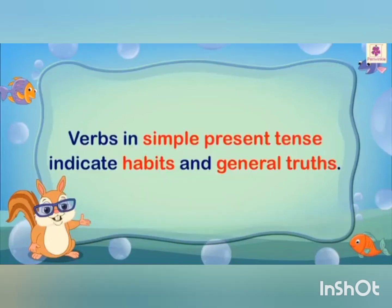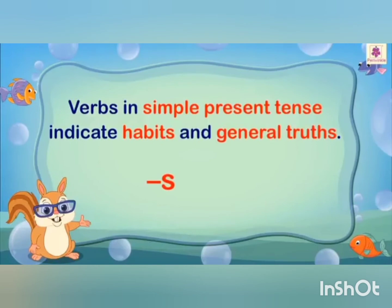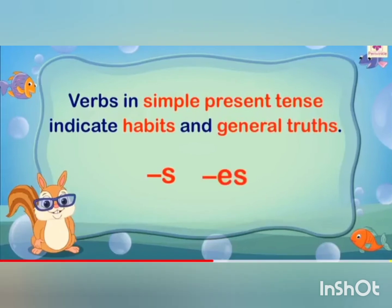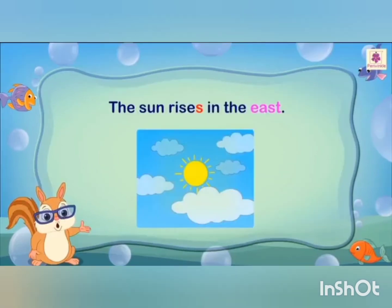Verbs in simple present tense indicate habits and general truth. In this case, the verb simply ends with S or ES. For example, the sun rises in the east.